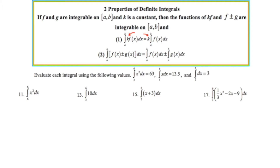Let's take a look at an example problem that will implement some of these properties. Evaluate each integral using the following values: the definite integral of x squared from 3 to 6 is 63, the definite integral of x from 3 to 6 is 13.5, and the definite integral of 1 dx from 3 to 6 is 3. Think of these three things as your clues.